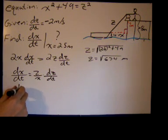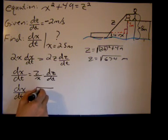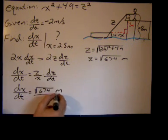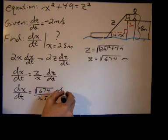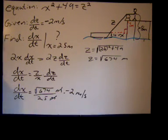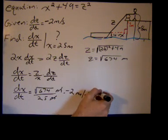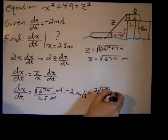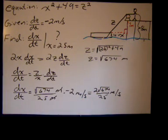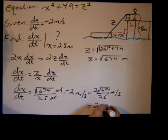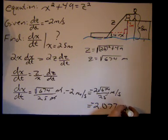So now I'll just plug those values in and solve for dx/dt. So dx/dt equals the square root of 674 meters over 25 meters, they'll cancel, times negative two meters per second. So we have two square roots of 674 divided by 25 meters per second. Why don't we get a decimal approximation of what that actually is? That would probably make a little more sense. So two times the square root of 674, divided by 25 is approximately 2.077, negative actually. I forgot that negative on there. Negative 2.077 meters per second.